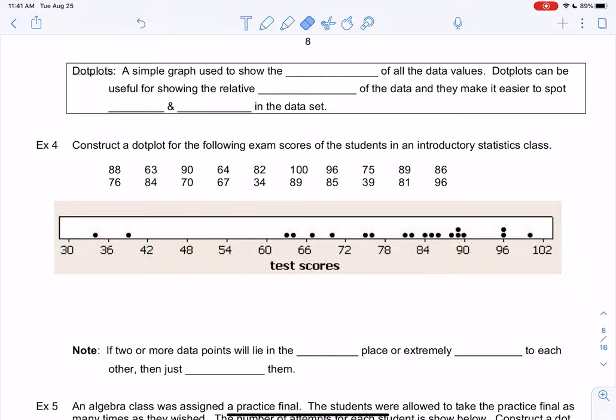Hey again, let's look at dot plots this time. So this might be a new graph for some of you, but it's actually a pretty quick graph to make. A dot plot is a simple graph used to show the location of all the data values. Dot plots can be useful for finding the relative position, and they can make it easy to spot gaps and clusters.